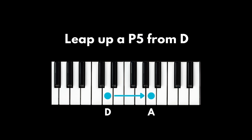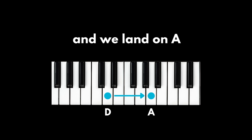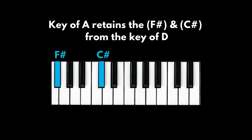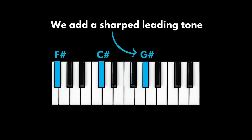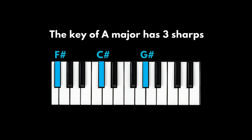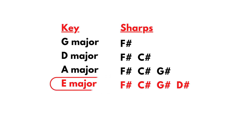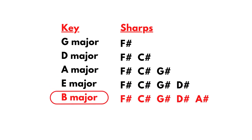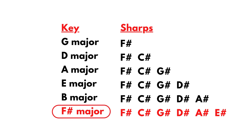Going up a perfect fifth from D major, we land on A. Same deal: we keep the F sharp and C sharp from the key of D, but in A major we add a sharped leading tone — a G sharp. So the key of A major has 3 sharps. This pattern continues: E major has 4 sharps, up a perfect fifth — B has 5 sharps, up a perfect fifth — F sharp has 6 sharps, and so on.